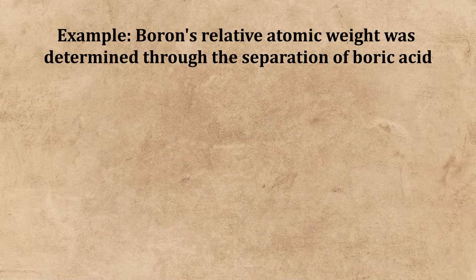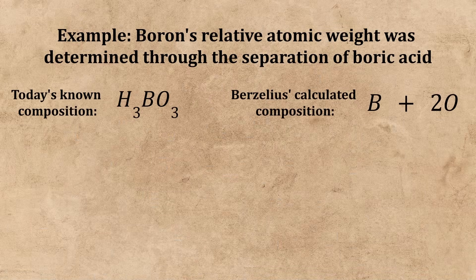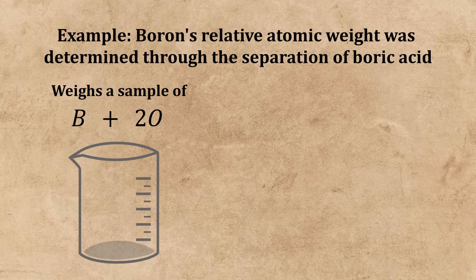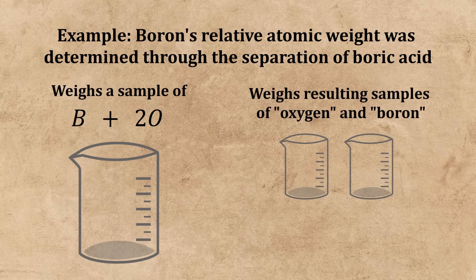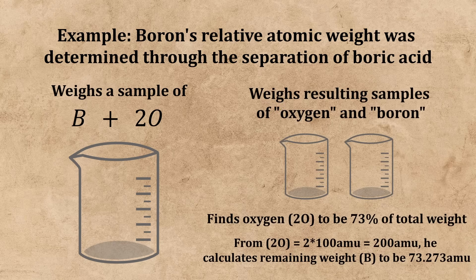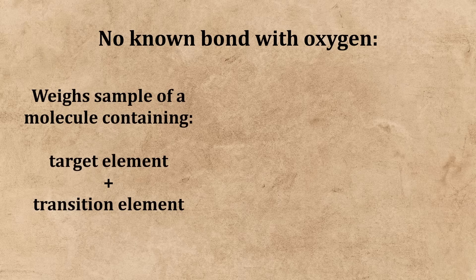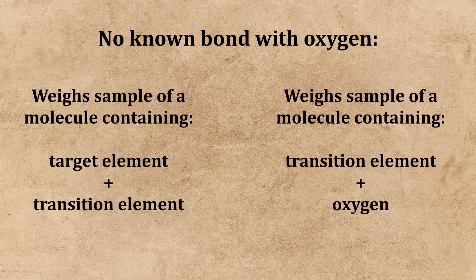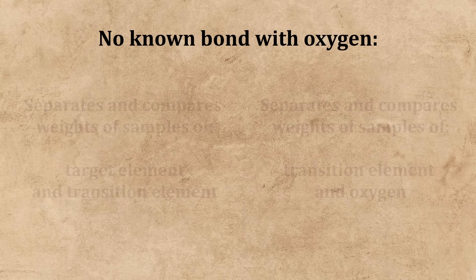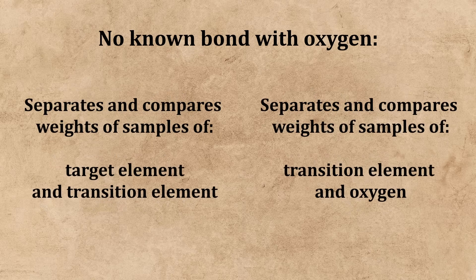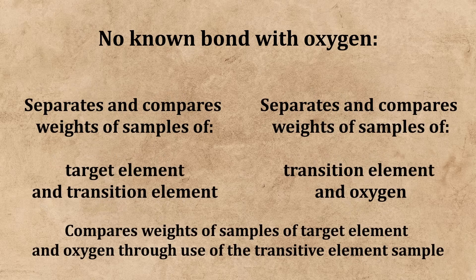He determines the weights of other elements by weighing samples of a chemical compound that that specific element shares with oxygen, and then splitting up this chemical compound into its components and weighing those as well. If there isn't a known molecule of a specific element with oxygen, he takes a molecule with that element and another element that does have a known bond with oxygen, and uses the transitive property to determine its relative weight.